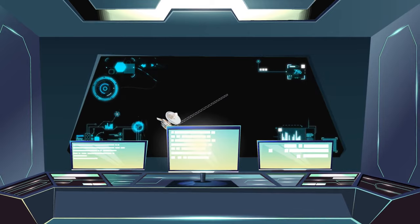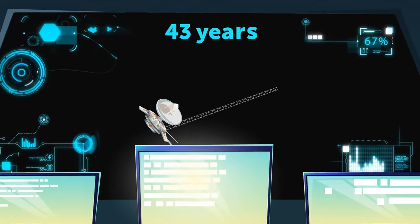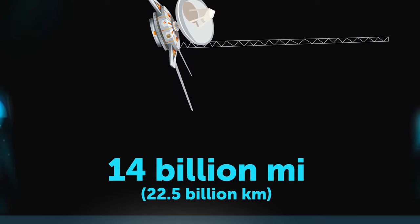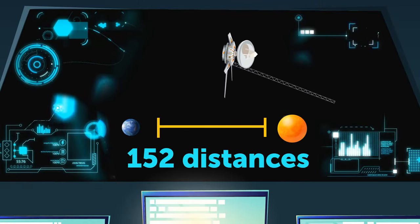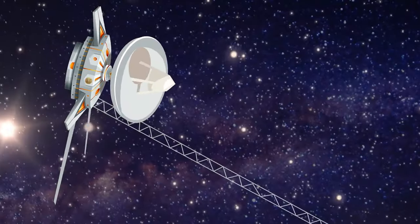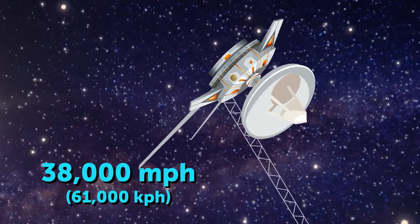As of 2021, Voyager has been operational for almost 43 years. The probe has traveled 14 billion miles. That's like 152 Earth-to-the-sun distances. And it's still making its way through space at 38,000 miles per hour.